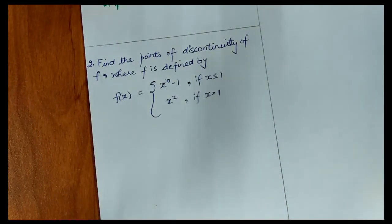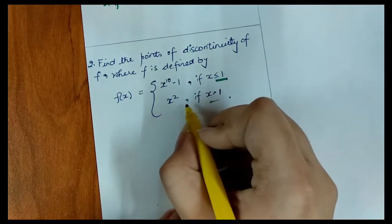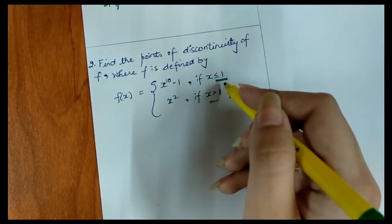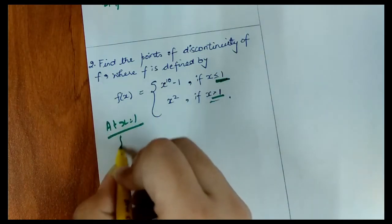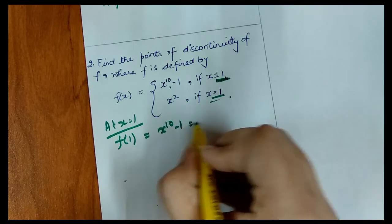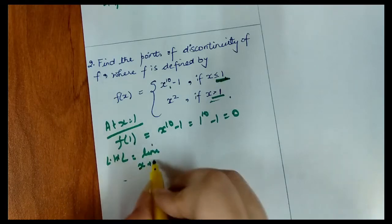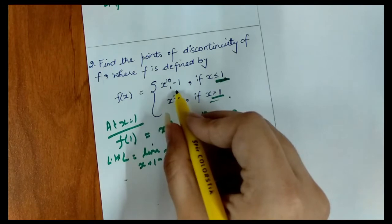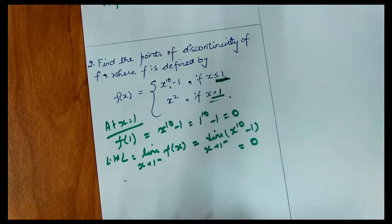Next question: we find the points of discontinuity of the function defined as x^10 minus 1 when x is less than or equal to 1, and x squared when x is greater than 1. We find that our function breaks at x equal to 1. So at x equal to 1, first we check f(1), then LHL: limit as x approaches 1 from the left of x^10 minus 1 equals 0.